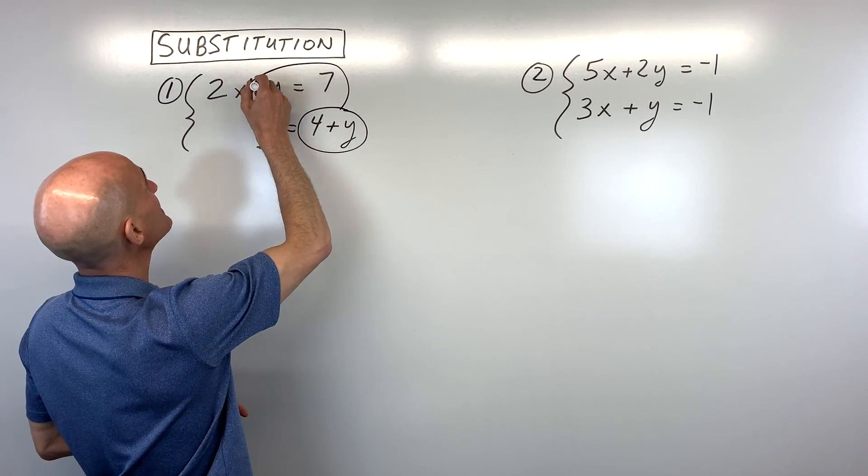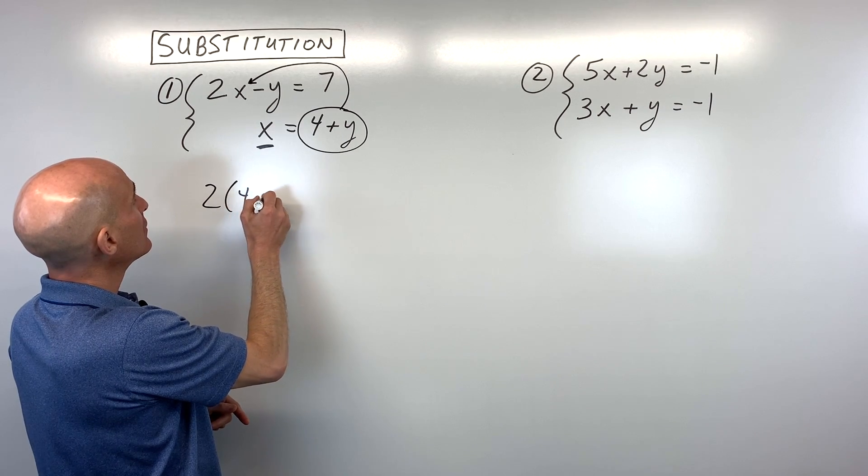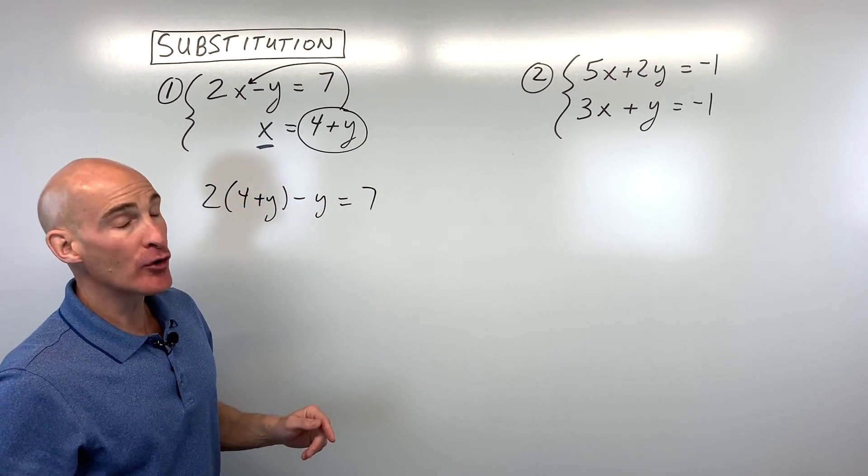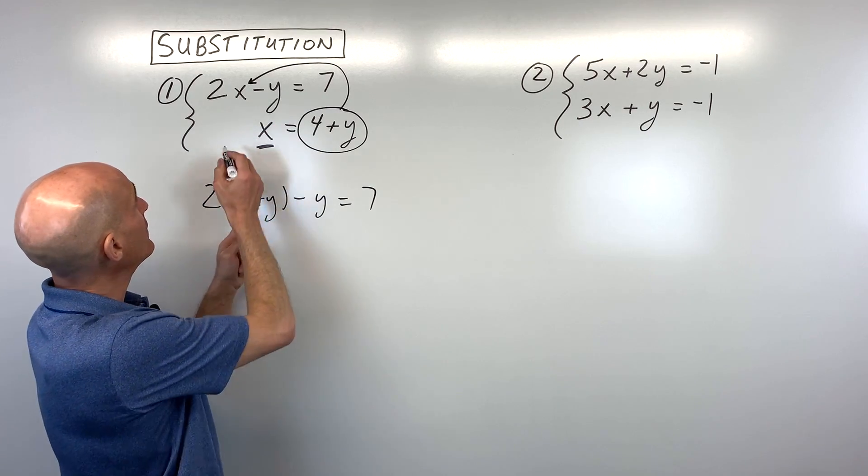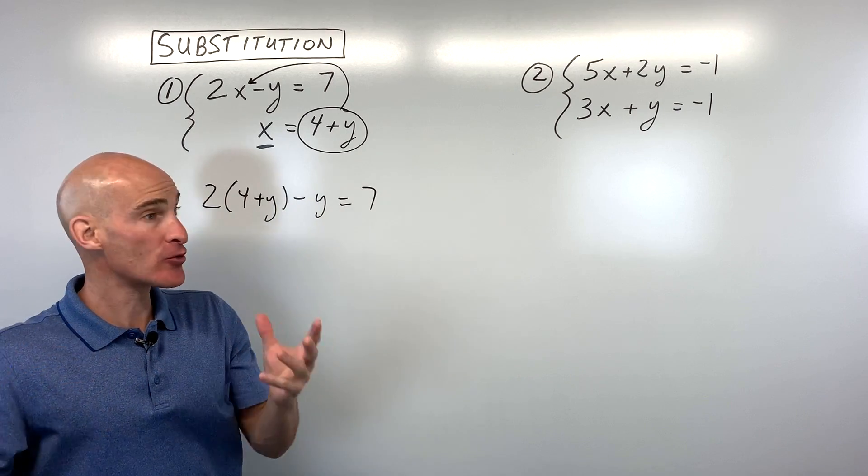All we have to do is put that in place of x, and we're going to get one equation with just y's in it. Notice when I did that substitution, I put what x equals - 4 plus y - in parentheses to treat it as a group.